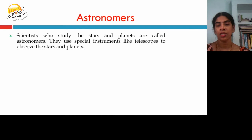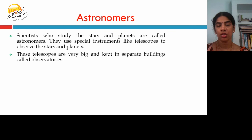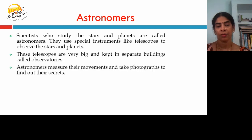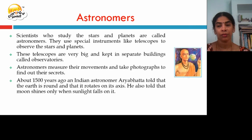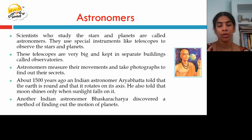Scientists who study the stars and planets are called astronomers. They use special instruments called telescopes to observe the stars and planets. These telescopes are very big and kept in separate buildings known as observatories. Astronomers measure movements and take photographs to find out their secrets. About 1500 years ago, Indian astronomer Aryabhata said that the earth is round, rotates on its axis, and that the moon shines only when sunlight falls on it. Another Indian astronomer, Bhaskaracharya, discovered a method of finding the motions of the planets.